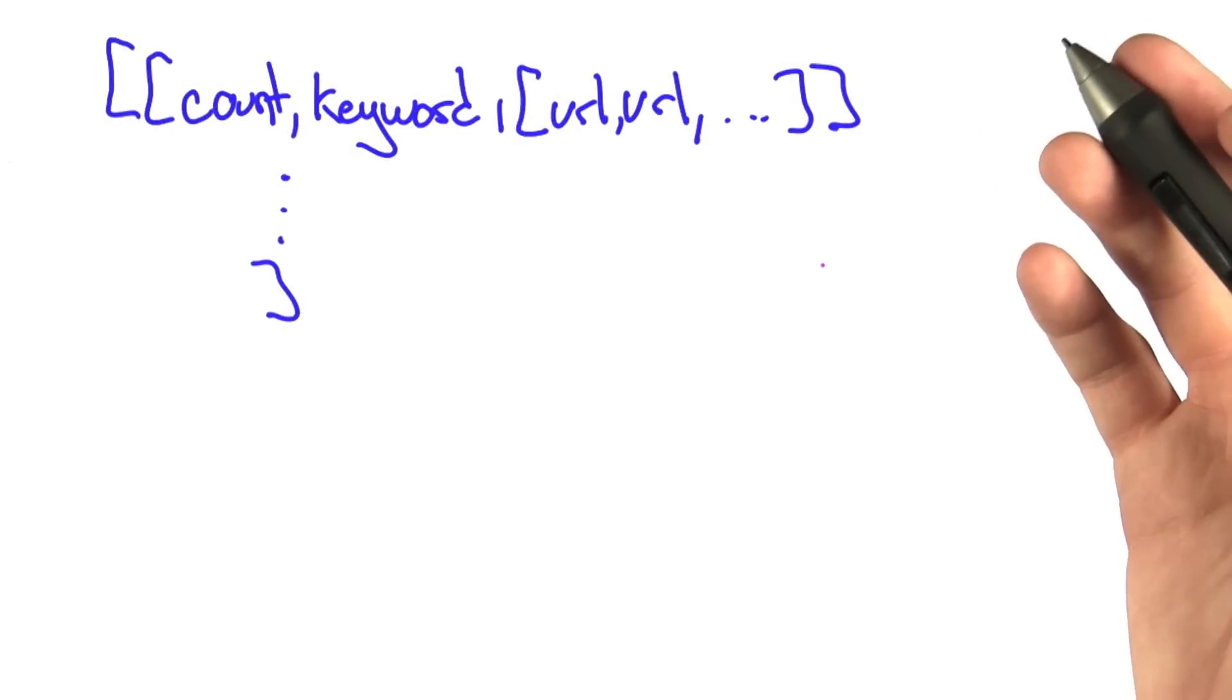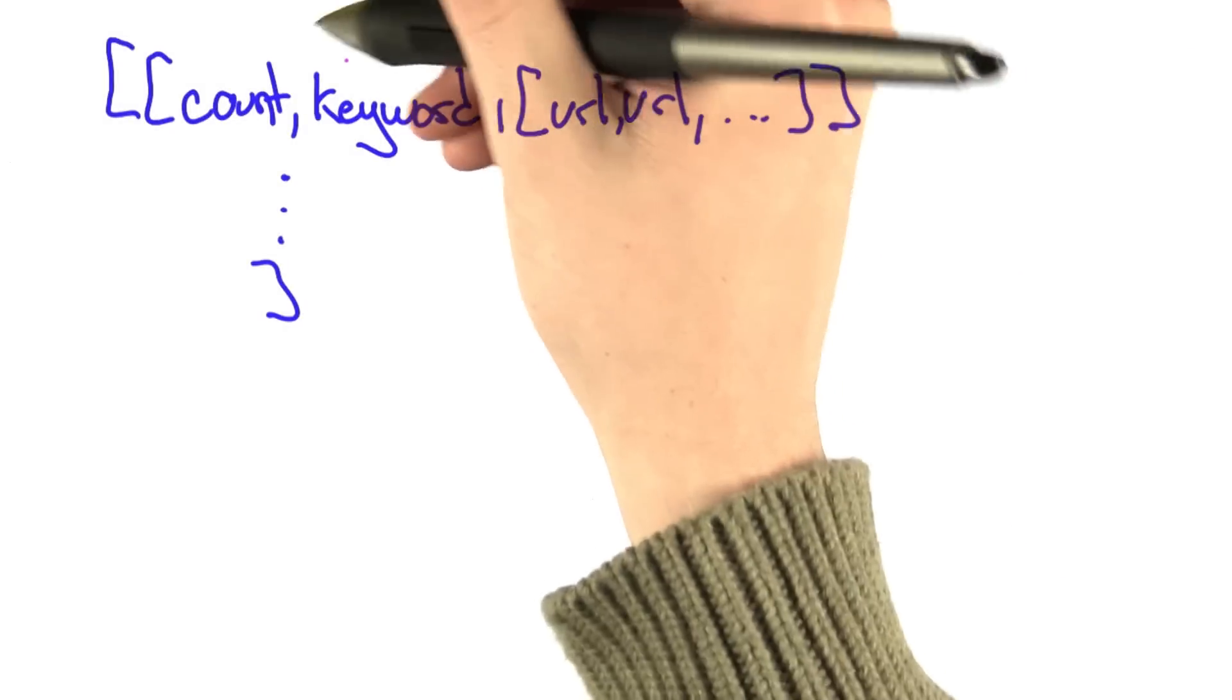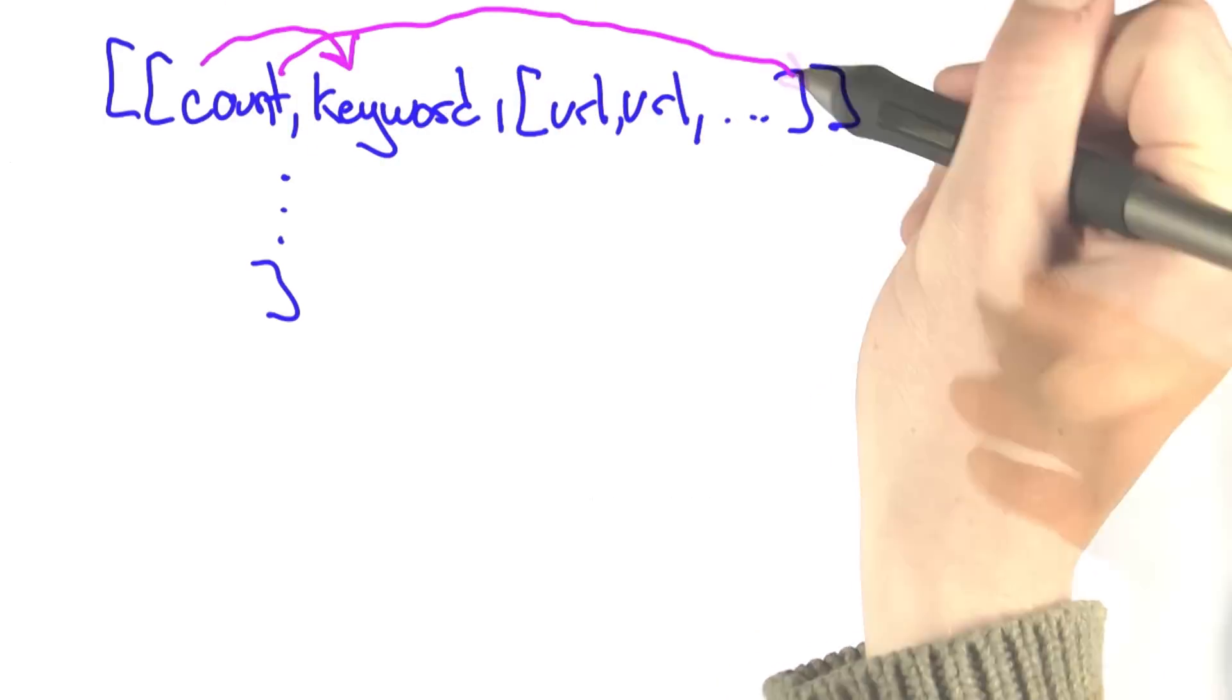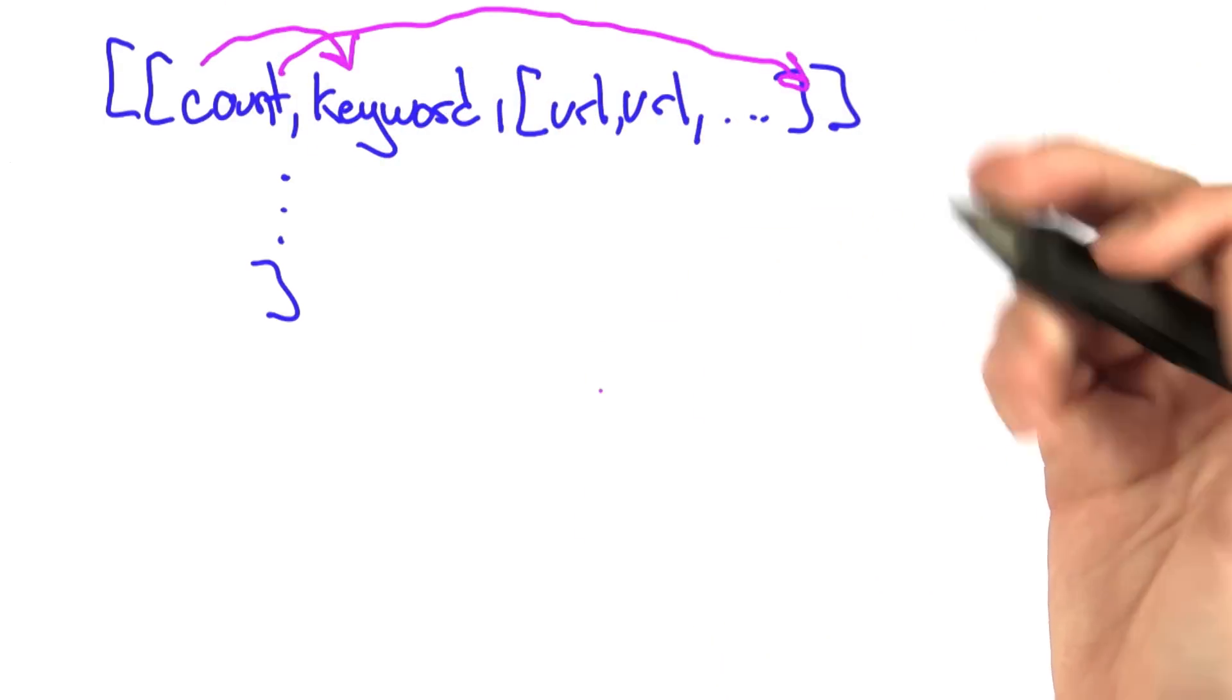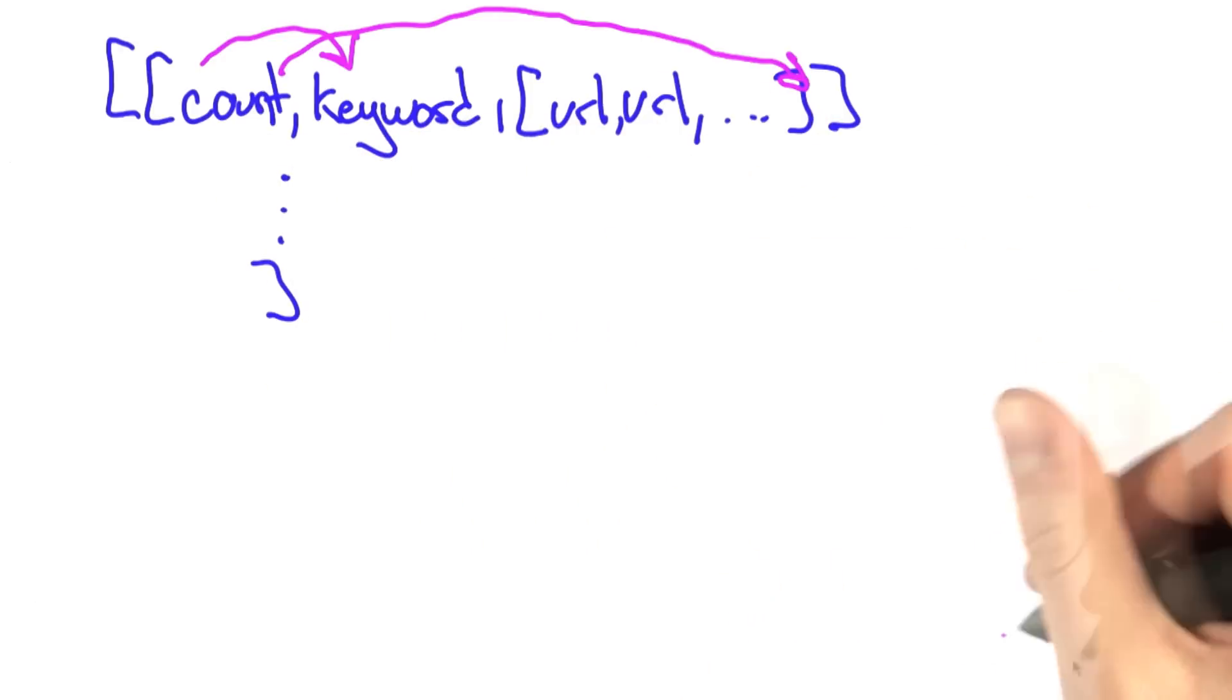For this one, I don't need to even go into an example. This is the same as the first choice, except keyword was moved over a position, and count was also moved over. For the same reason as before, namely that we only have one count for the keyword instead of for each URL, this isn't the right solution.